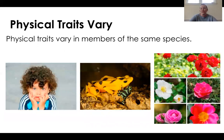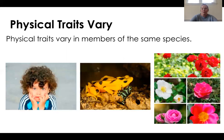Physical traits vary in members of the same species. This little boy has curly hair. However, not all boys have curly hair. Some little boys have straight hair. In the next photo, we'll see the frogs. The mother frog has yellow skin, while her froglet has green skin.